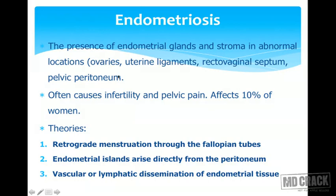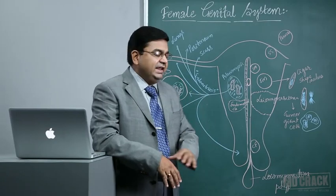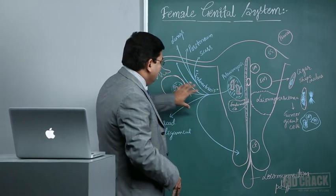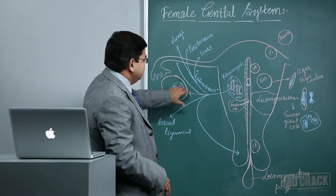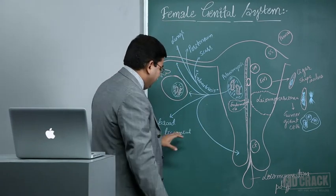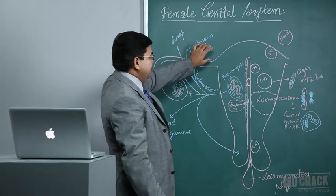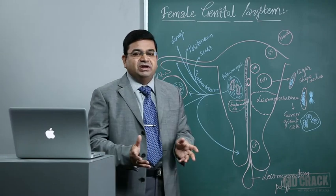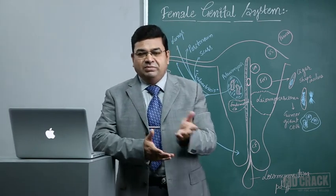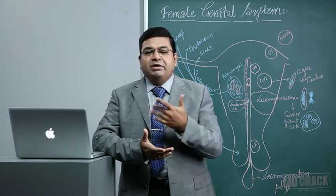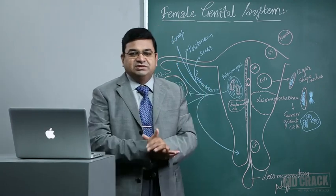Endometriosis is the same concept but outside the uterus — it is the presence of endometrial glands and stroma in abnormal locations like the ovaries, uterine ligaments, rectovaginal septum, and pelvic peritoneum. Very rare sites include the fallopian tube, broad ligament, lungs, and peritoneal scars. There are several hypotheses explaining how endometrial glands and stroma appear at these different sites outside the uterus.